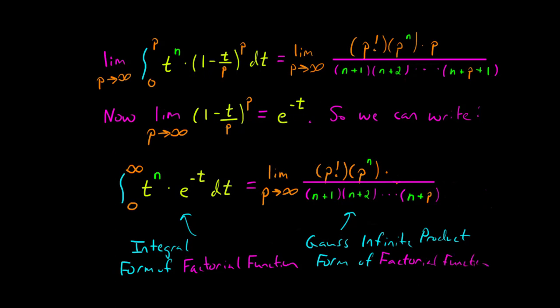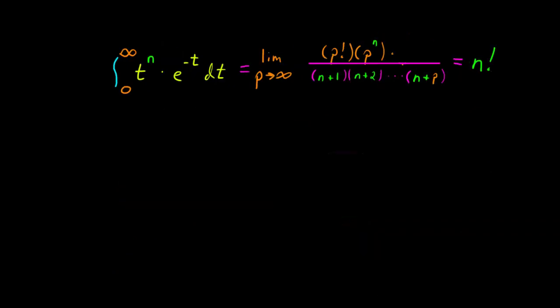On the left-hand side we have the integral form of the factorial function, and on the right-hand side we have the Gauss infinite product form — both equal to n factorial. To get the gamma function from these two expressions, we change n to n minus 1 in the integral on the left-hand side, and divide the right-hand side by n. That gives us n minus 1 factorial, or equivalently gamma of n. We've shown that the integral form and the infinite product form, derived through very different means, are in fact equivalent. Thanks for watching — see you next time!